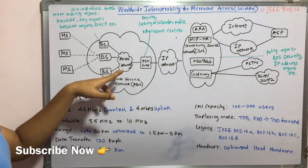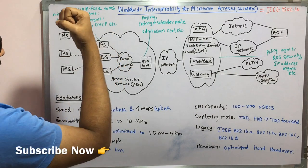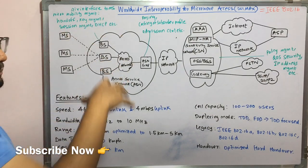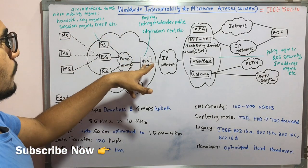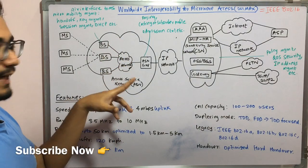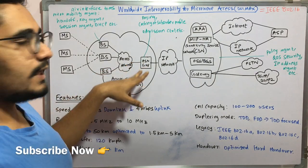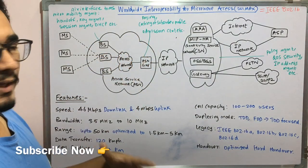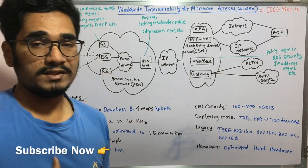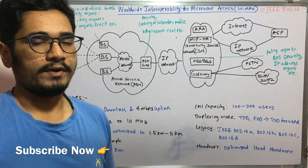Then you have this access network. So access network just collects all the available base stations which are there in that particular ASNs and then it forwards to this ASN GW that is access service network gateway. GW is for the gateway. The major functionality of this part of this model is the paging, paging of all the devices or all the systems which are there in the WiMAX and then caching of subscriber profile.